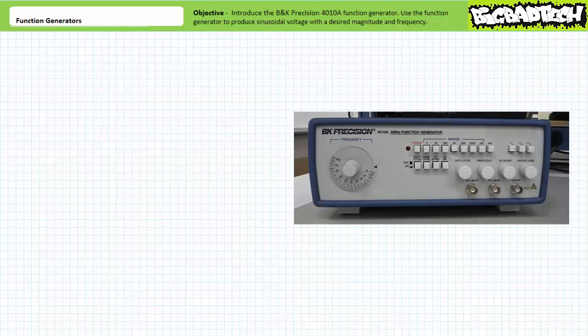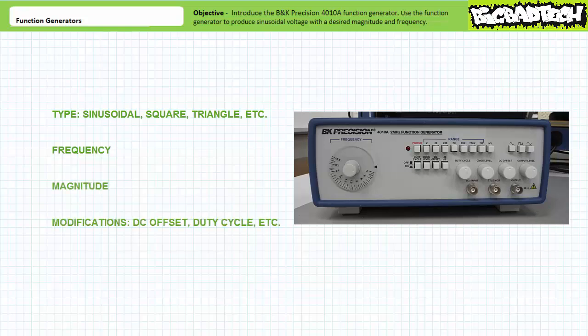Let's first orient ourselves to the BK Precision 410A function generator front plate. There's really only a couple areas we need to concern ourselves with today. Principally, the means of adjusting the style of waveform produced, the means of adjusting frequency, the means of adjusting amplitude, and the means of modifying the output for special-purpose scenarios.